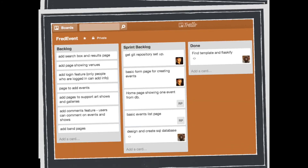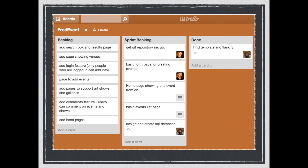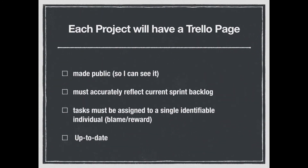Trello allows you to manage lists easily — it just gives a little structure that might be helpful. Each project will have a Trello page. Make it public and send me the link so I can actually look at it. It has to reflect what people are currently working on, what the current sprint backlog is, and all tasks must be assigned to single identifiable individuals — so we know who to credit or who to follow up with. It has to be kept up to date, not just something you did once at the start of a week and a half.